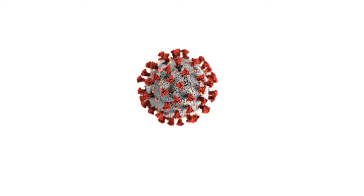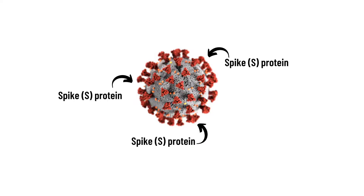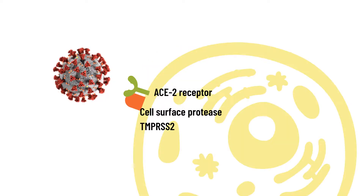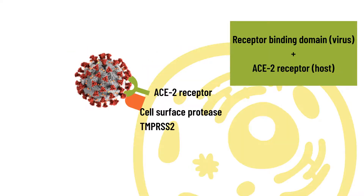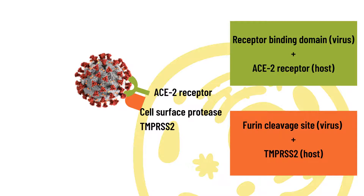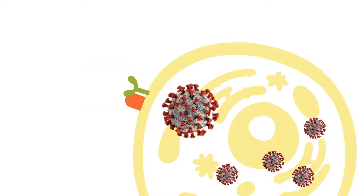This is the general structure of the SARS-CoV-2, and the red protrusions on the surface of the virus are the spike proteins. For SARS-CoV-2 to replicate in host cells, it must first use its receptor binding domain on the spike protein for attachment to the cells. In addition, the cell surface protease TMPRSS2 facilitates the cutting of a part on the spike protein called the furin cleavage site, allowing the virus to enter host cells for viral replication.